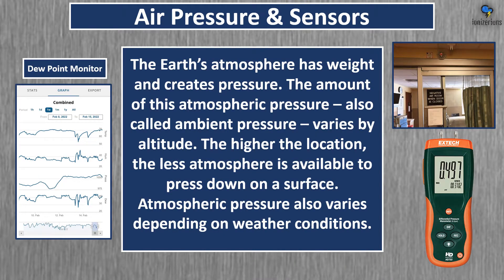The Earth's atmosphere has weight and creates pressure. The amount of this atmospheric pressure, also called ambient pressure, varies by altitude. The higher the location, the less atmosphere is available to press down on a surface. Atmospheric pressure also varies depending on weather conditions.